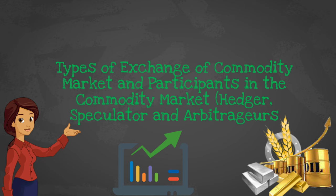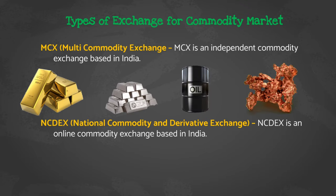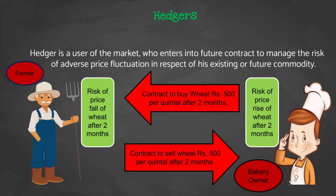There are mainly two types of exchange for commodity market: MCX (Multi-Commodity Exchange) and NCDEX (National Commodity and Derivative Exchange). MCX is an independent commodity exchange based in India where trading mostly happens in gold, silver, crude oil, copper, etc. NCDEX is an online commodity exchange based in India where trading is mostly in agricultural commodities, for example wheat, soybean, mustard seed, sugar, etc.